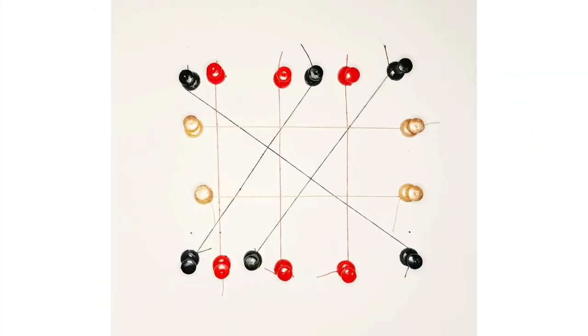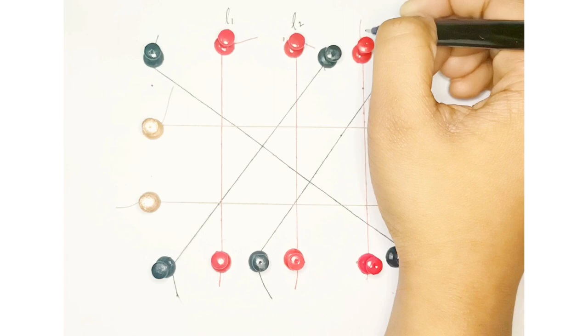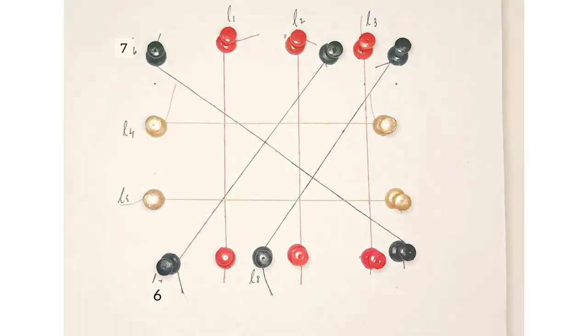Here, some pieces of thread are parallel to each other, some are perpendicular, and some are inclined. Let the threads or yarns depict the lines L1, L2 up to L8. Then we have the following observations.